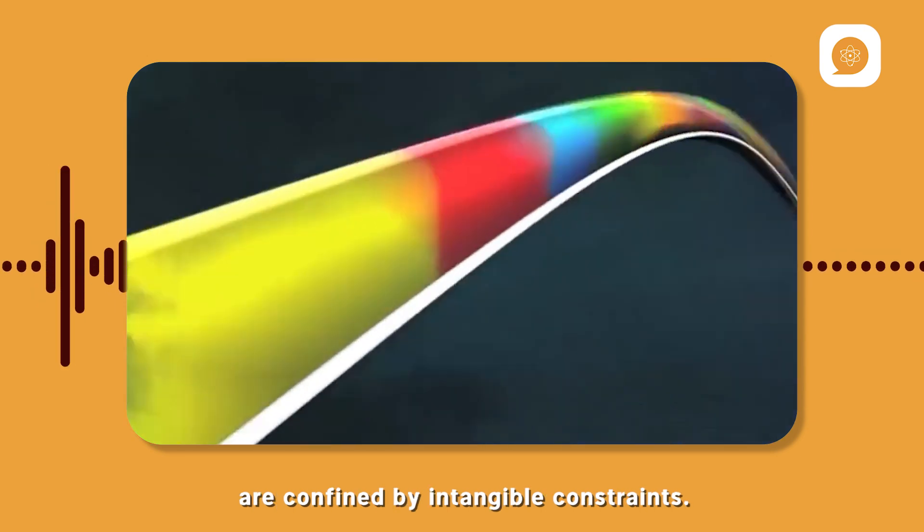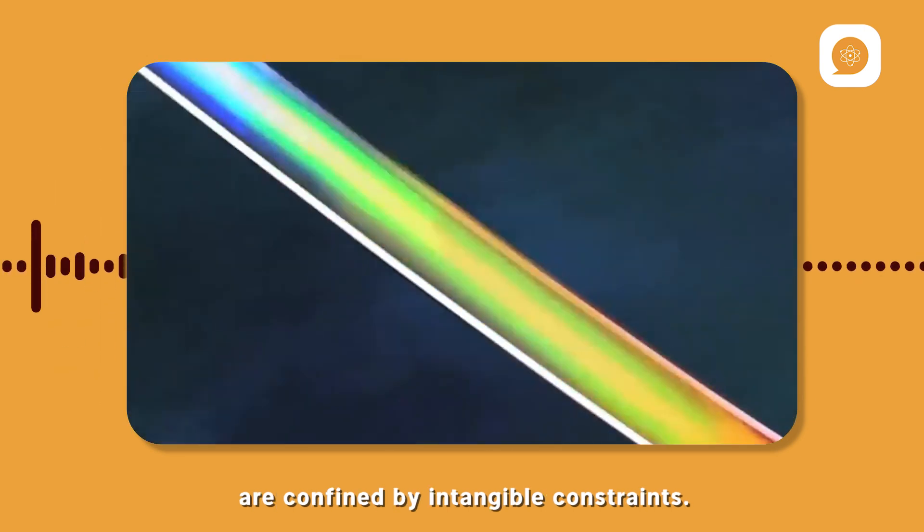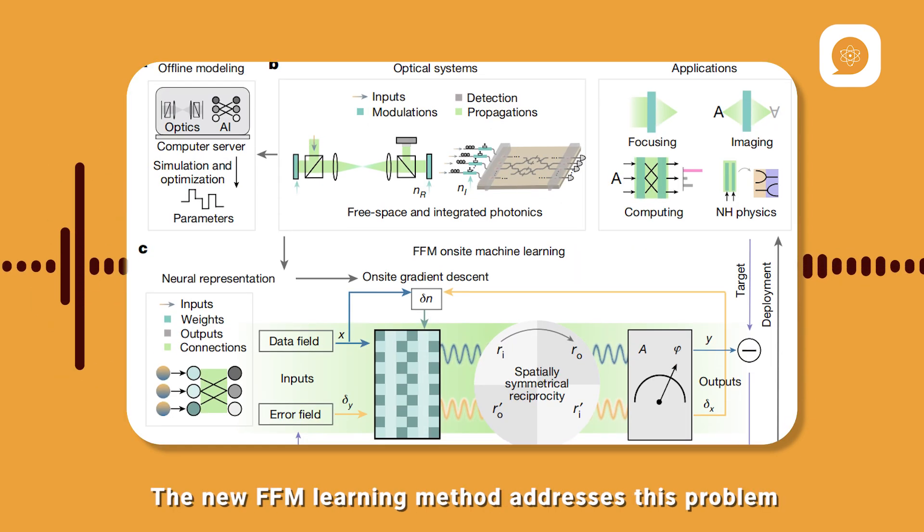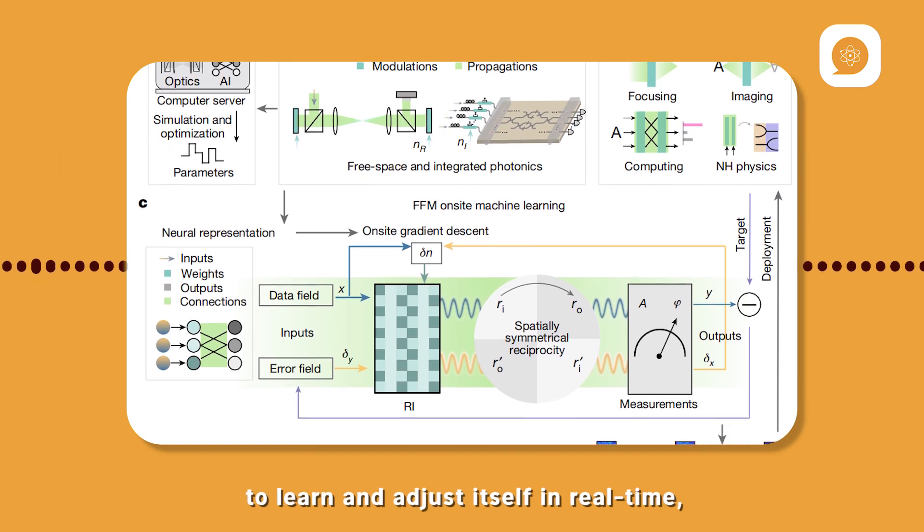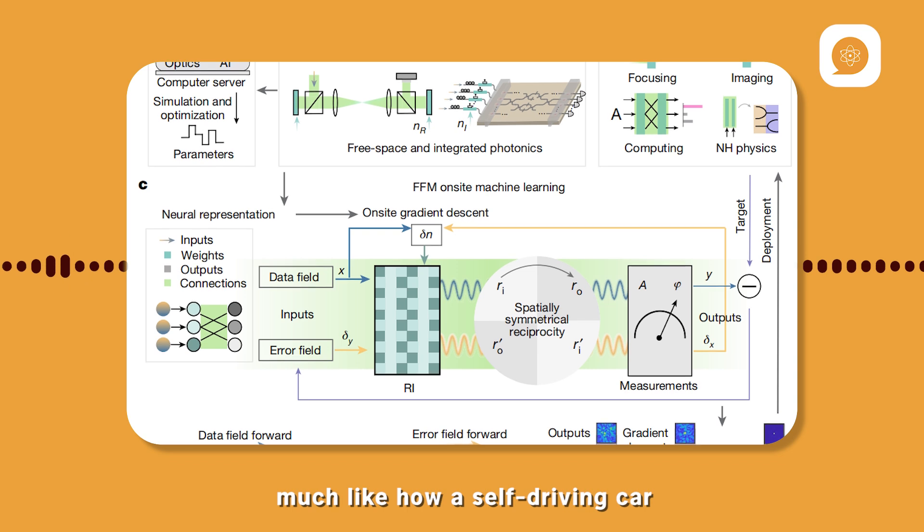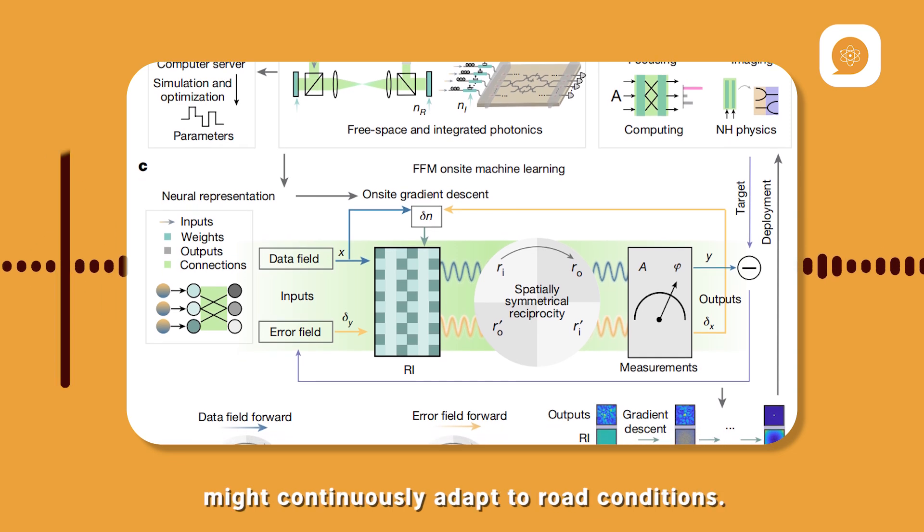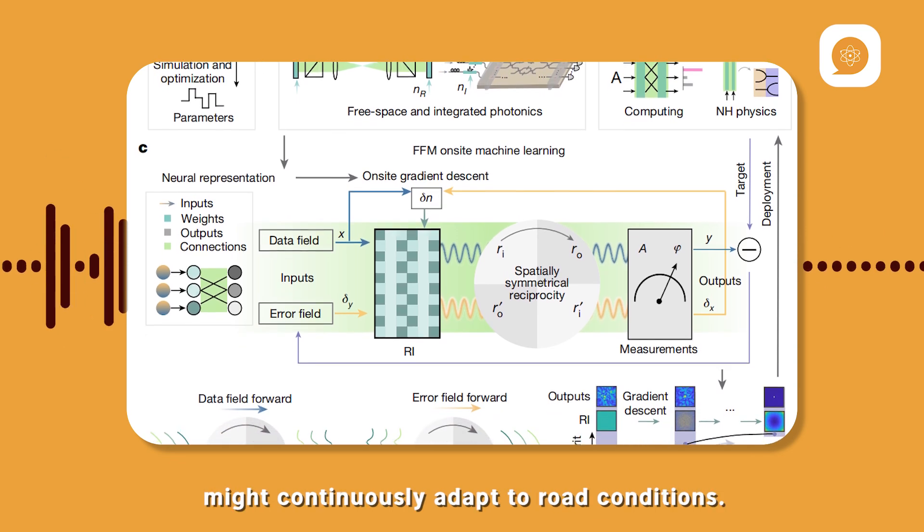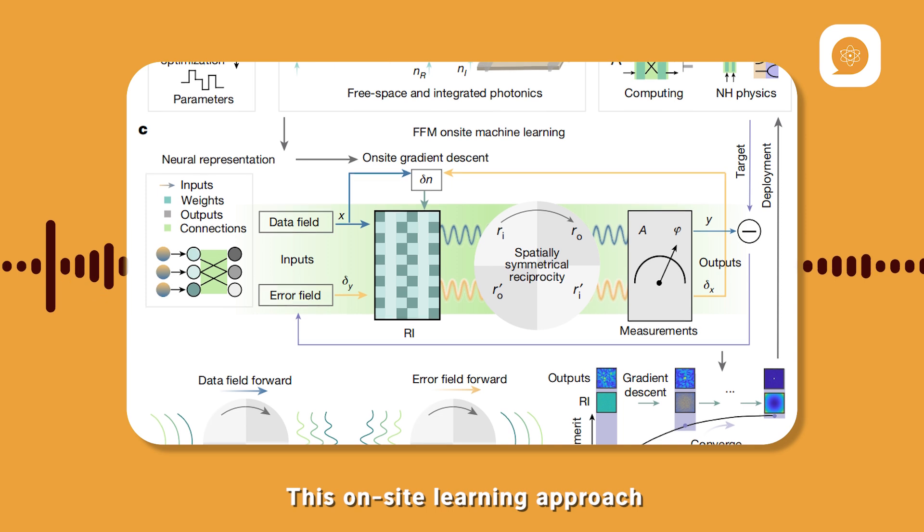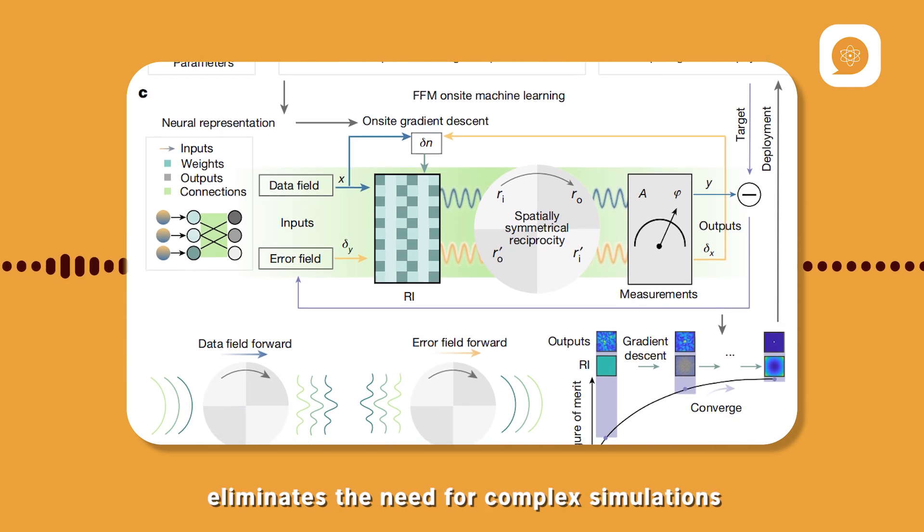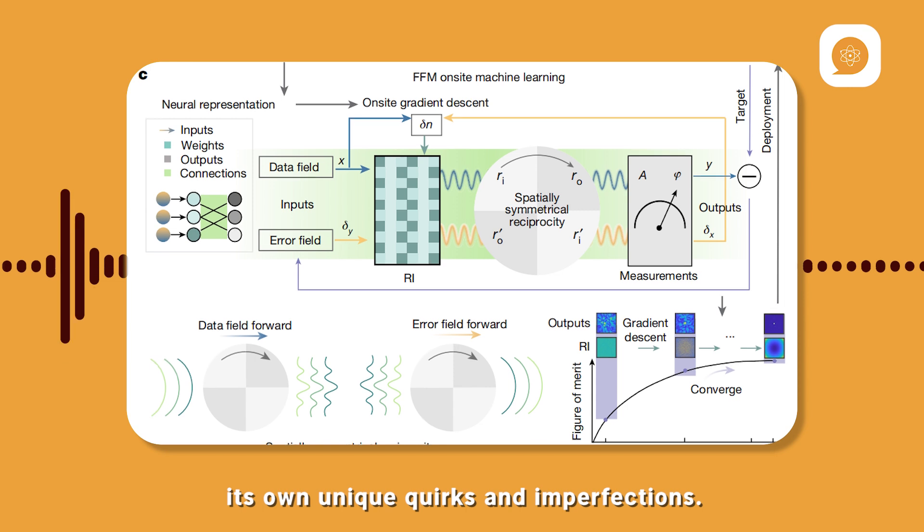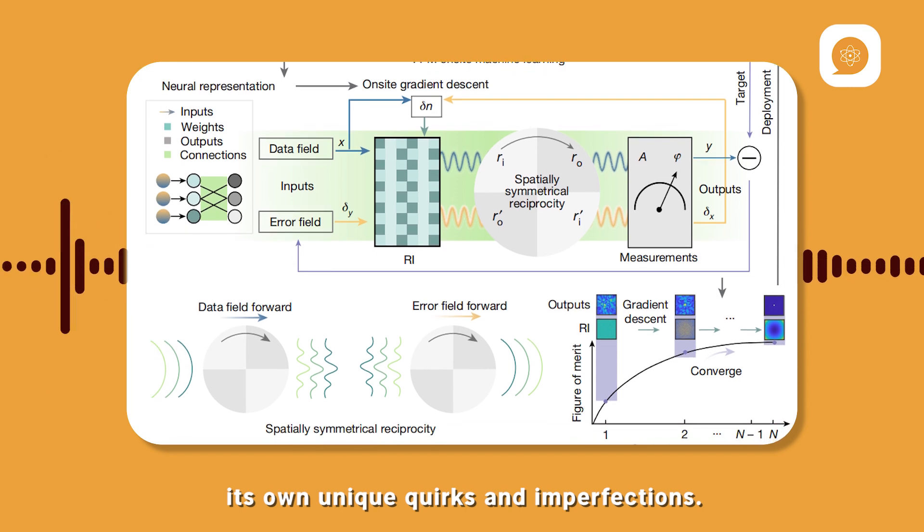The new FFM learning method addresses this problem by allowing the optical system to learn and adjust itself in real time, much like how a self-driving car might continuously adapt to road conditions. This on-site learning approach eliminates the need for complex simulations and allows the system to account for its own unique quirks and imperfections.